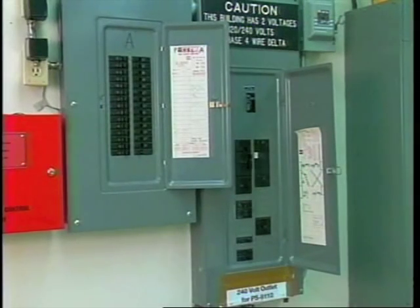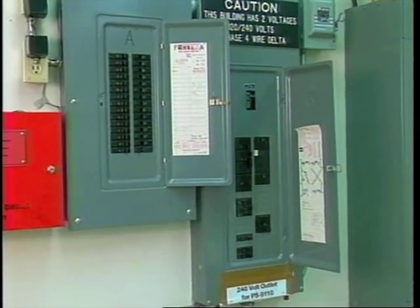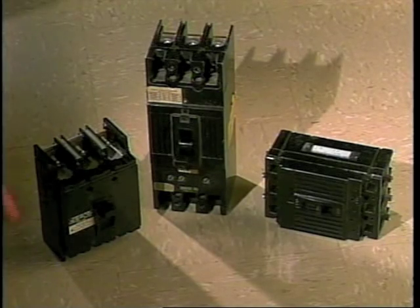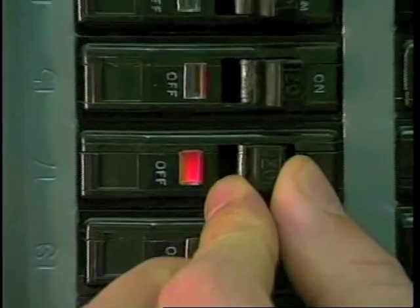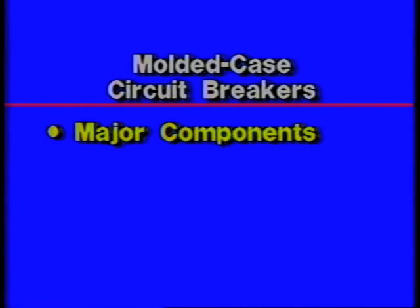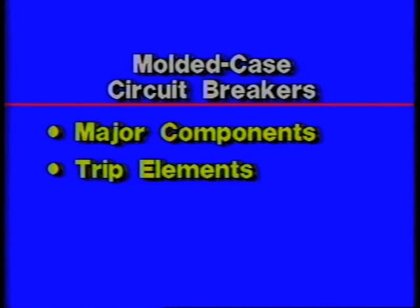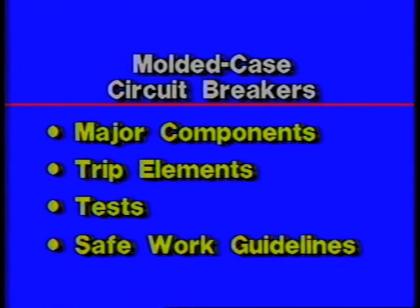Molded case circuit breakers are commonly used devices for low voltage circuit protection. They're available in a wide range of sizes and ratings and have many applications. Molded case circuit breakers are normally used where a resettable circuit interrupting device is needed. In this program we're going to look at the major components of molded case circuit breakers, identify the four trip elements used in molded case circuit breakers, identify four commonly performed tests on molded case circuit breakers, and discuss generally accepted guidelines for working safely with this type of equipment.